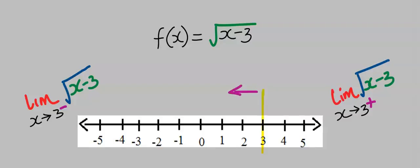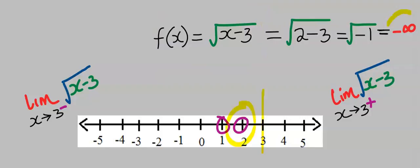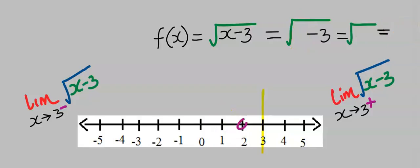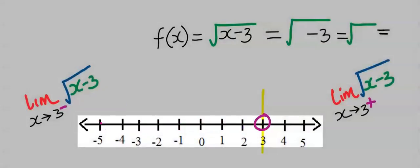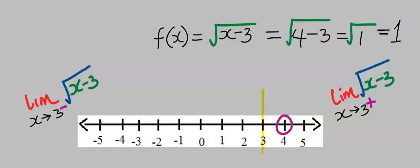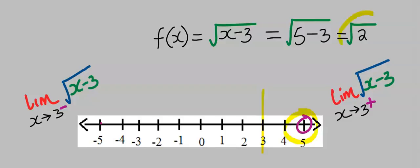Let's consider the left-hand approach and move towards the left, considering values 2 and 1. Substituting 2 into this function gives us undefined. Substituting 1 gives us negative infinity. If we continue in this direction, we are still going to continue having problems. Let's try 3. At x equal to 3, we got 0, which is a real number. Let's try 4. At x equal to 4, we got a real number. Let's try 5. At x equal to 5, we got a real number.